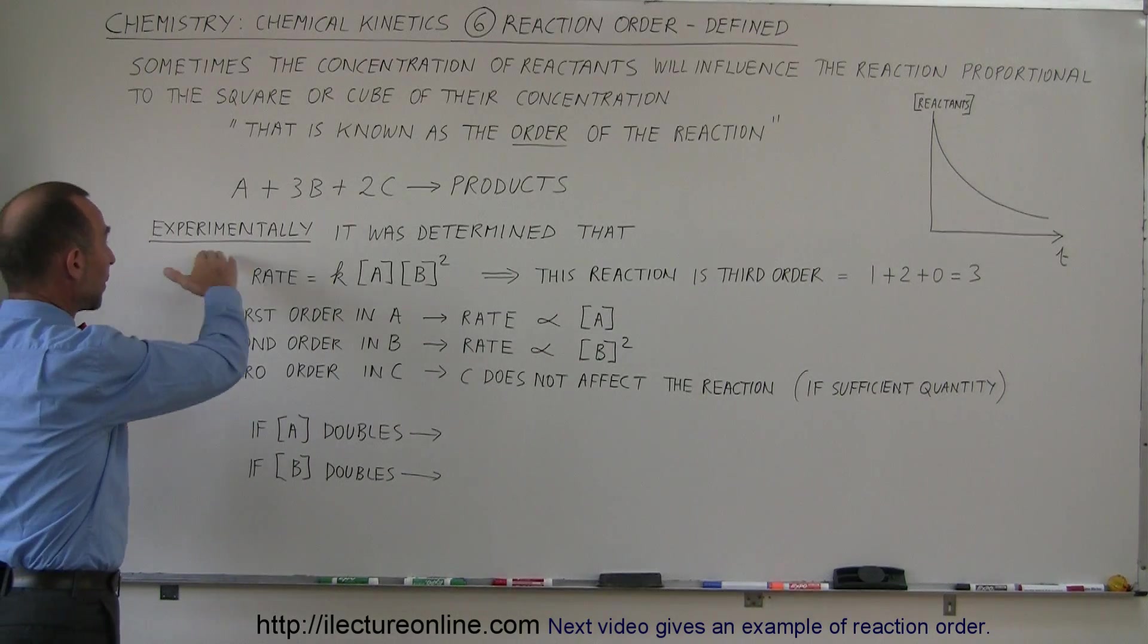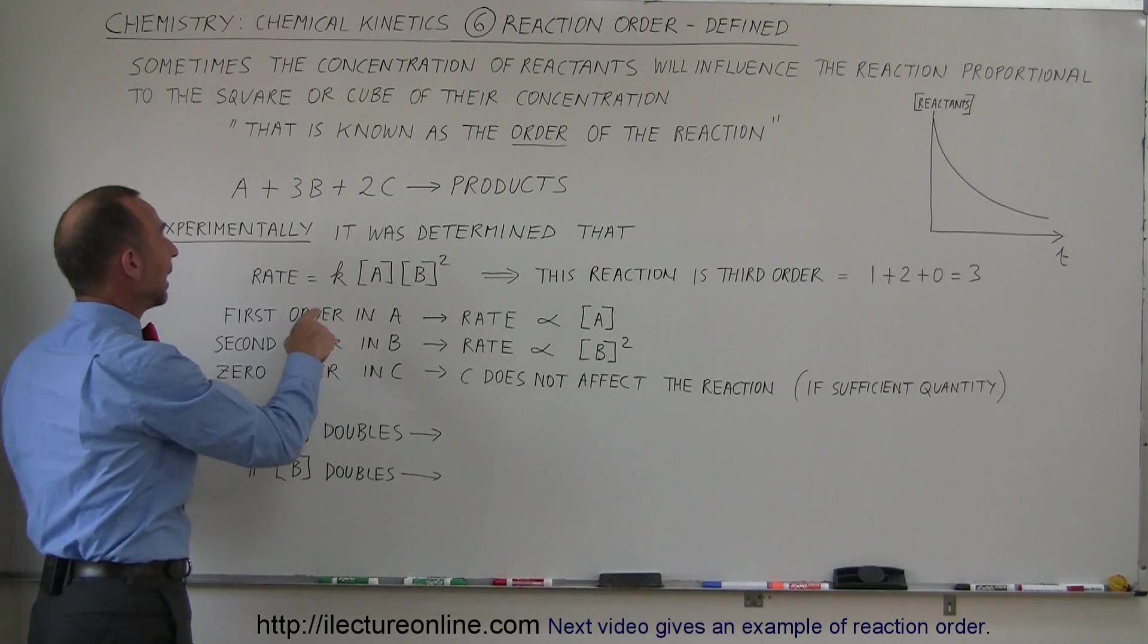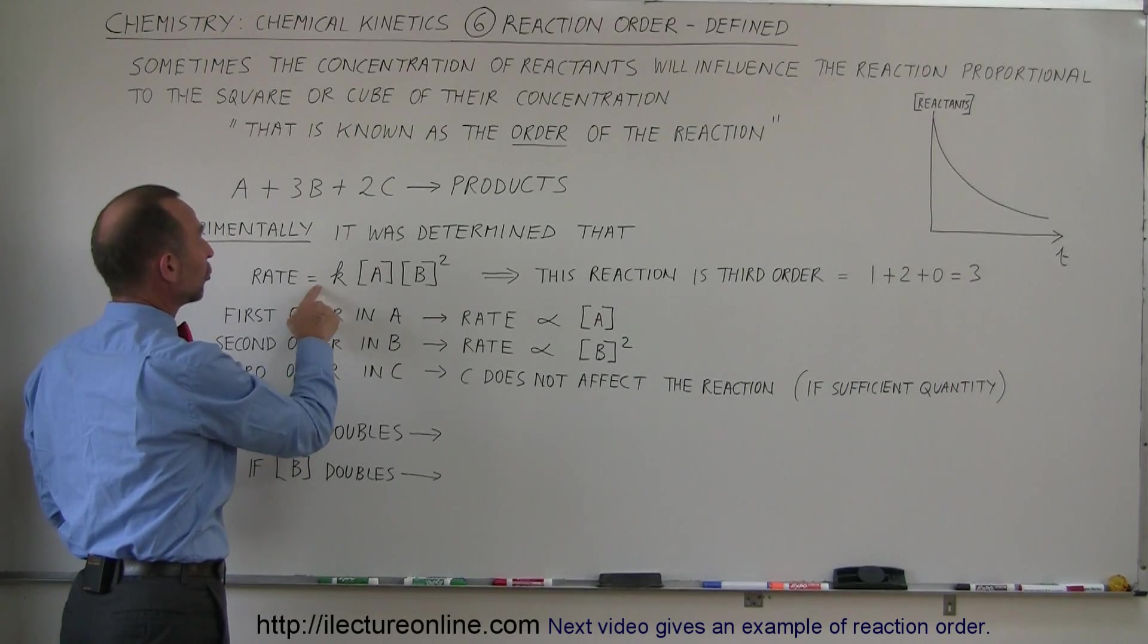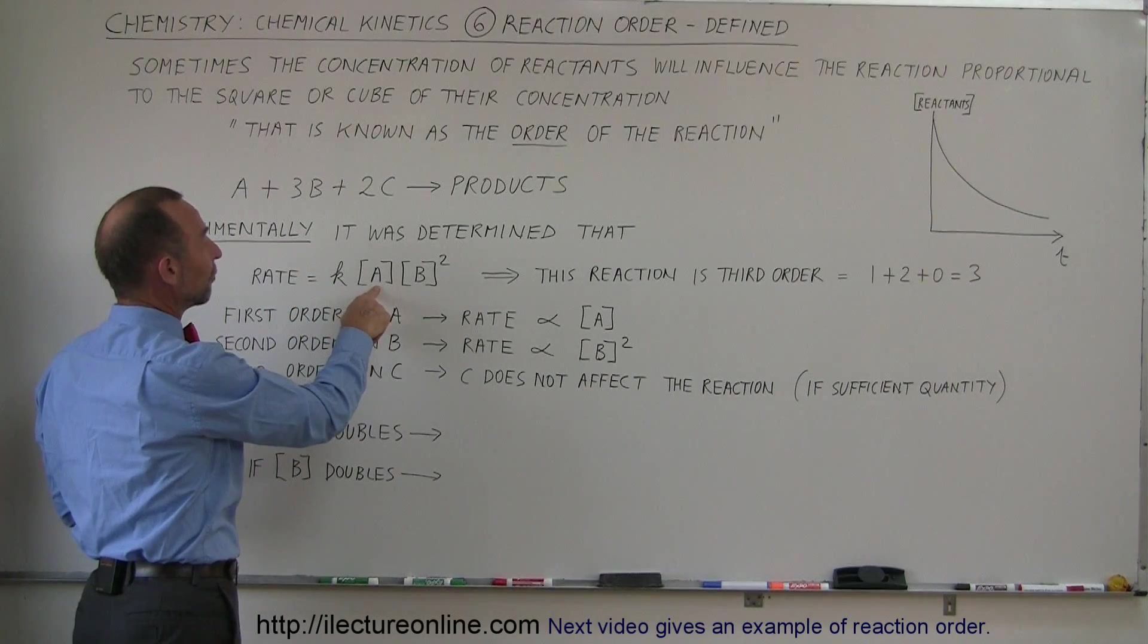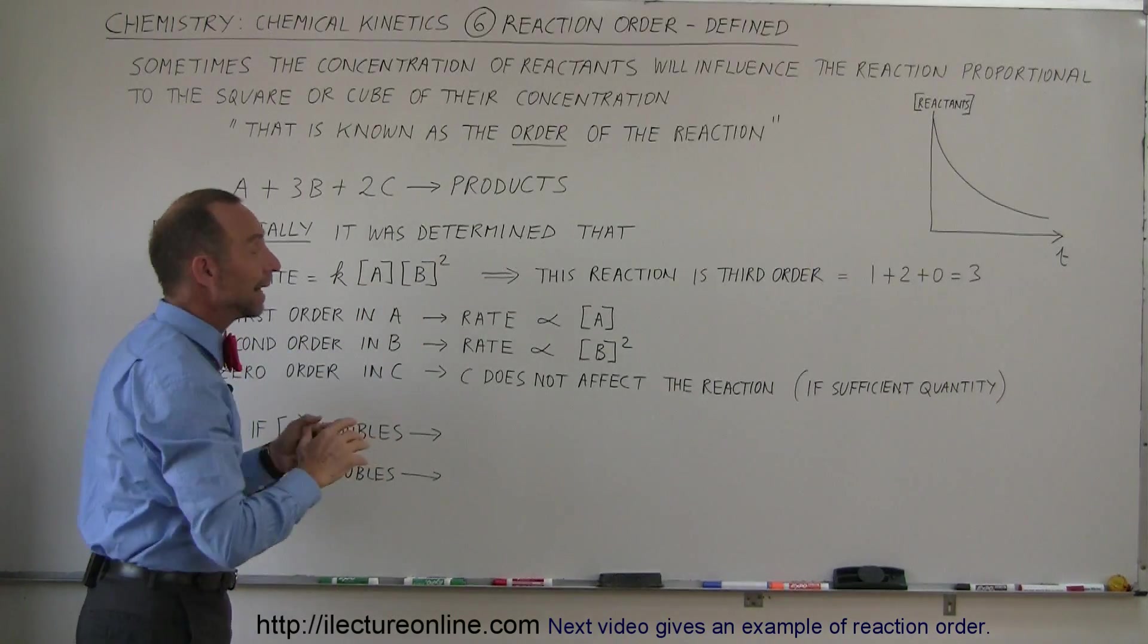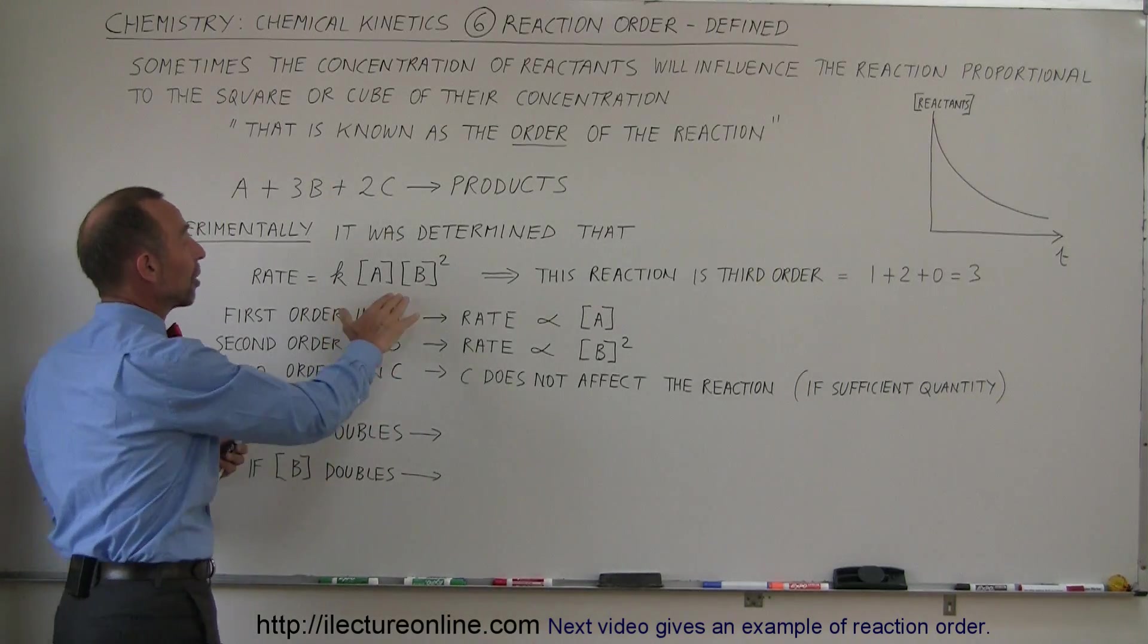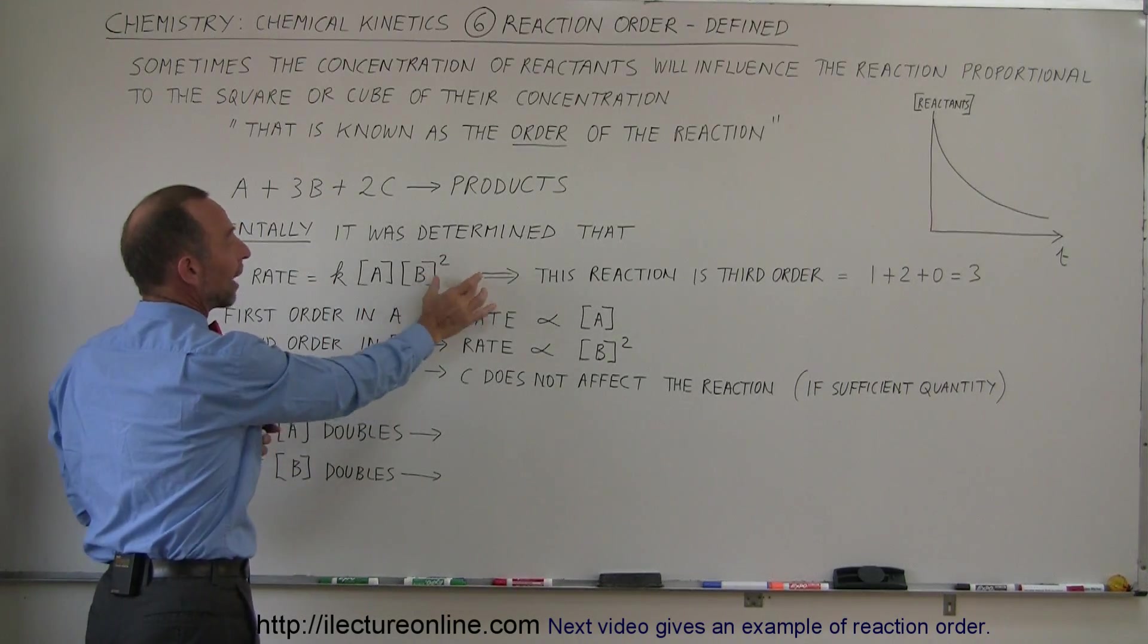But right now let's say that we experimentally determined that the order of this reaction was that the rate is proportional to the concentration of A to the first power, the concentration of B to the second power, and it's not related or not dependent on the concentration of C. So that's why we don't have the C there.